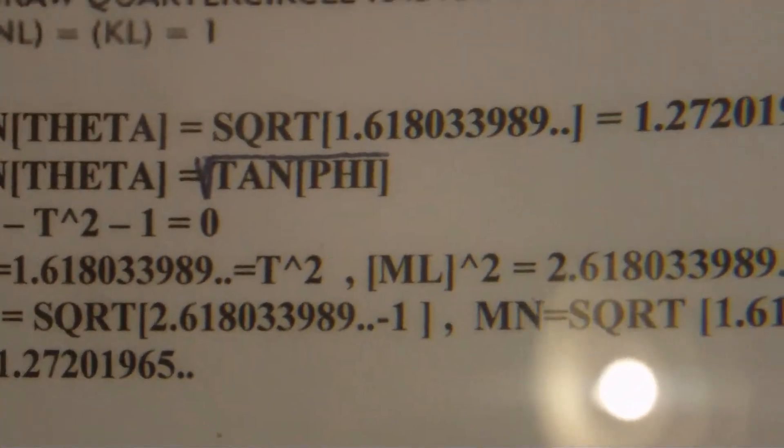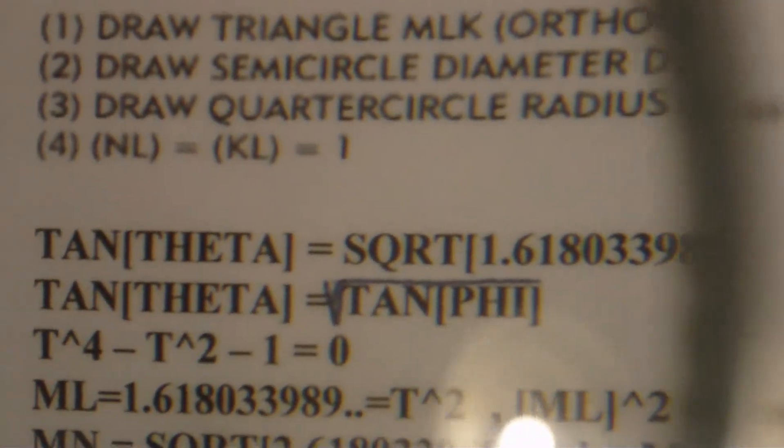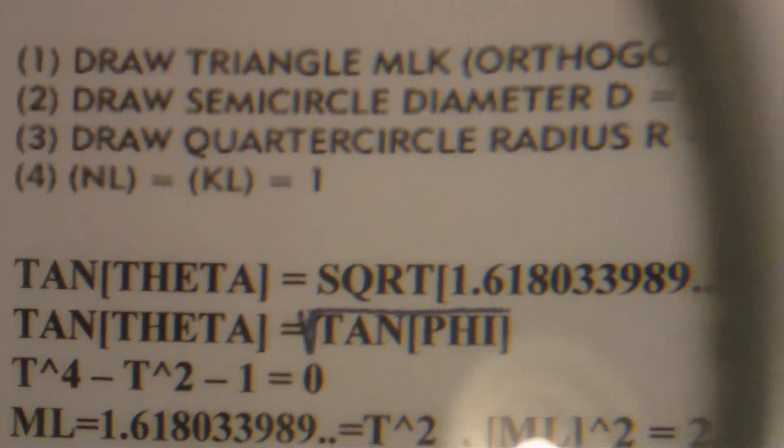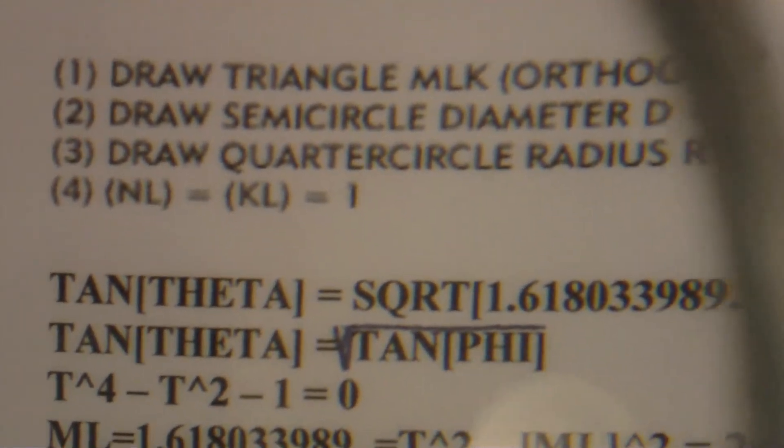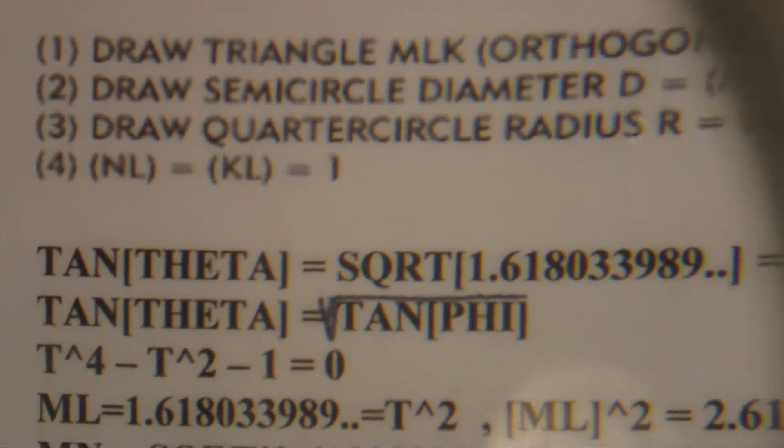This is the construction. We see that theta is the square root of the golden number phi. Tan theta equals the square root of tan phi.